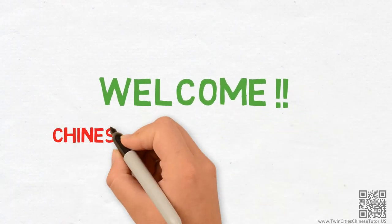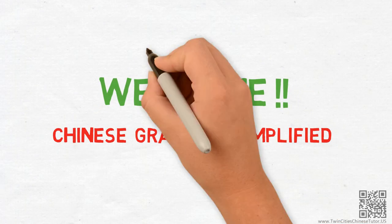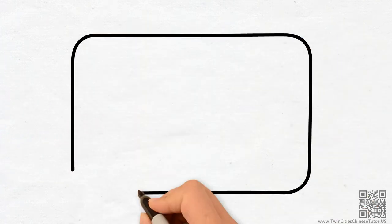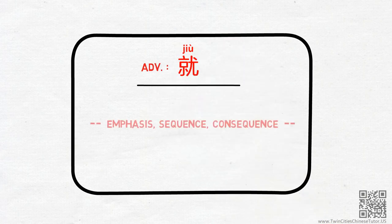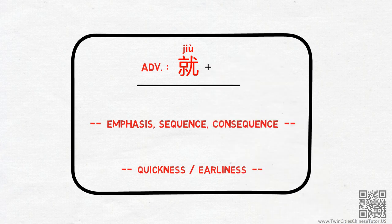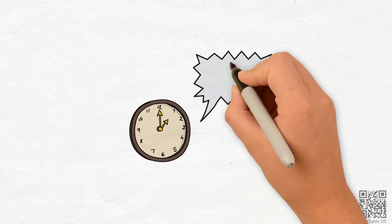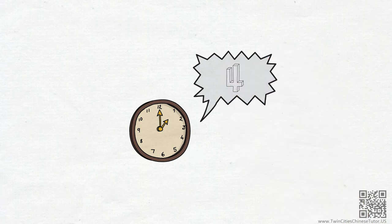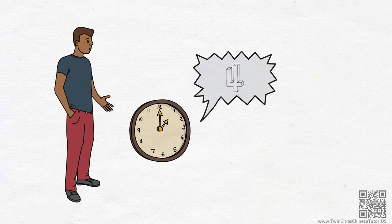Hello everyone! Welcome to Chinese Grammar Simplified. After the last two videos, I hope you, like my friend Taylor, got a grasp of the most common ways the adverb jiu is used in Chinese. If jiu shows up in front of a verb, you should now be able to visualize it as an arrow or a rocket. In the third episode of the jiu series, in the next four minutes, we're going to explore more advanced usage of this word as a conjunction. Let's start!